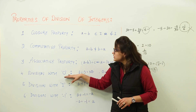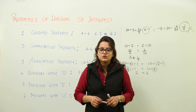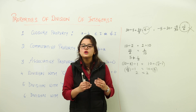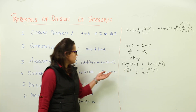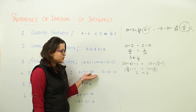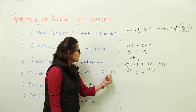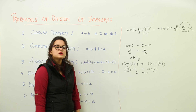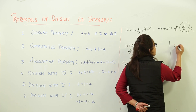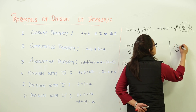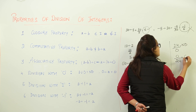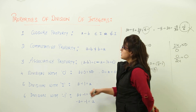The next is division with 0. Any number divided by 0 is not defined in mathematics. So when you divide any integer by 0, the result is not defined. However, if you divide 0 by any integer, the answer is 0. For example, 24 divided by 0 is not defined, but 0 divided by 24 equals 0.